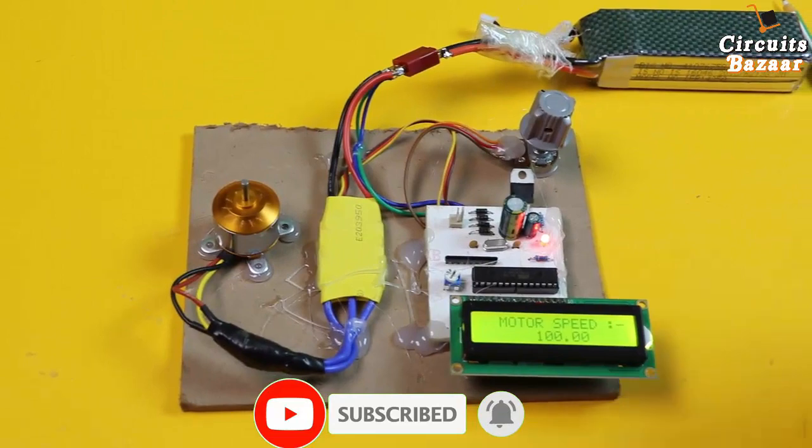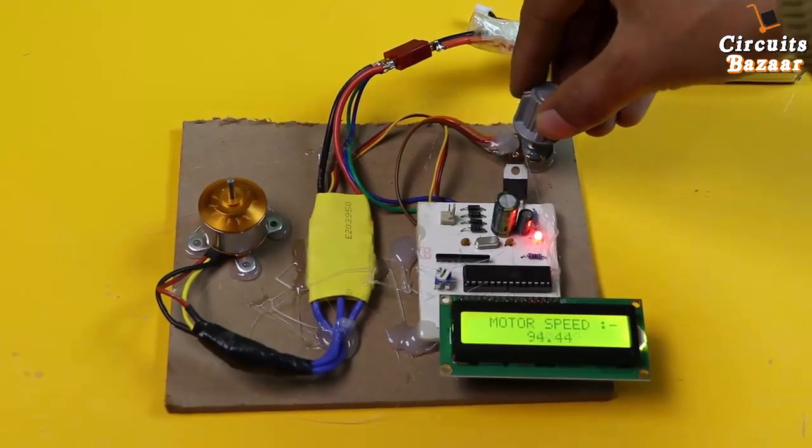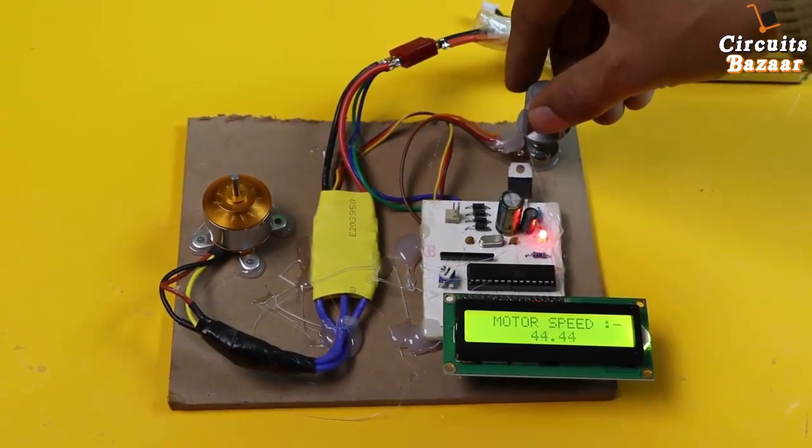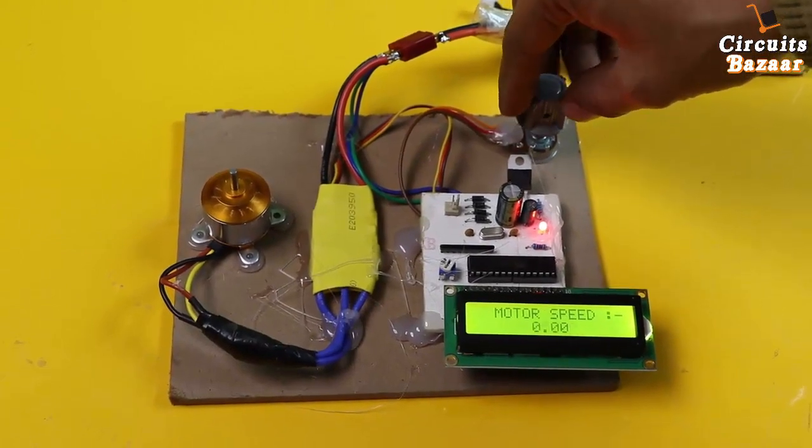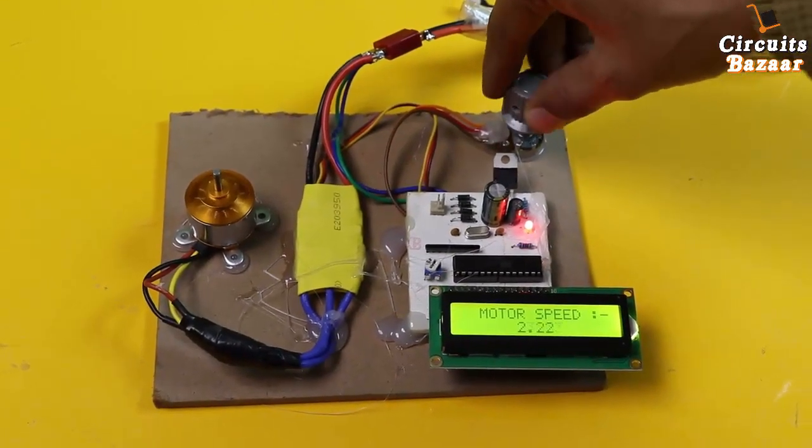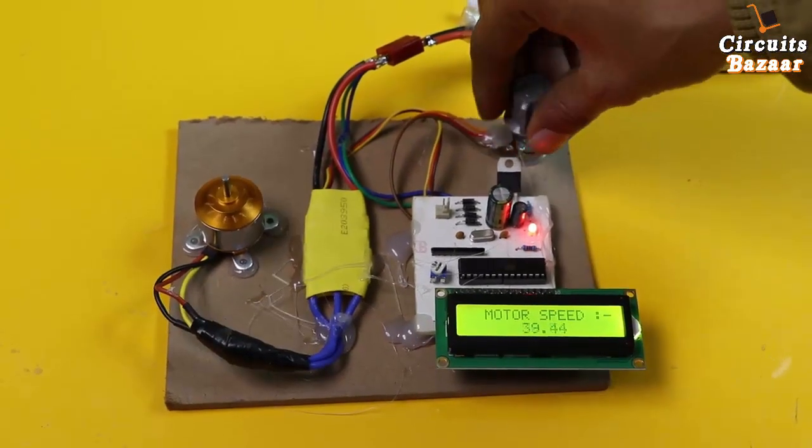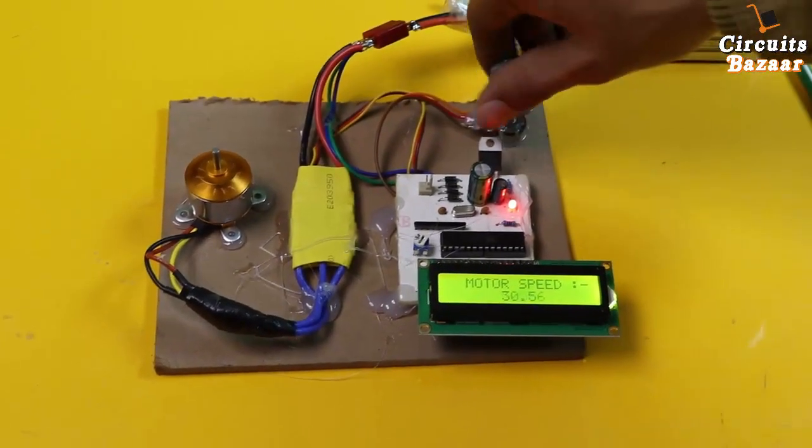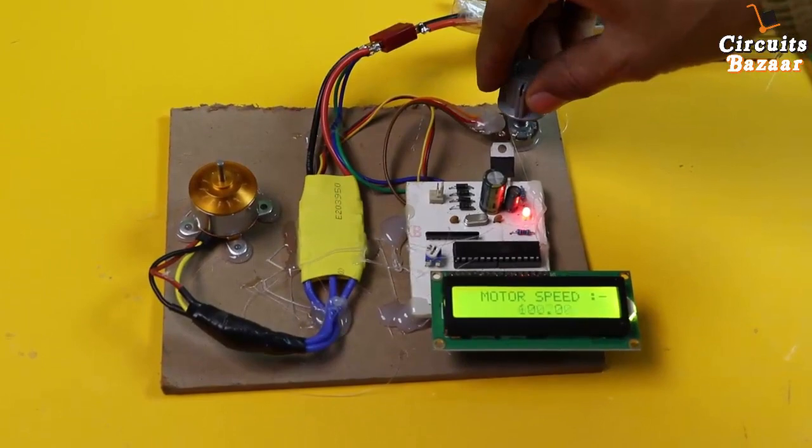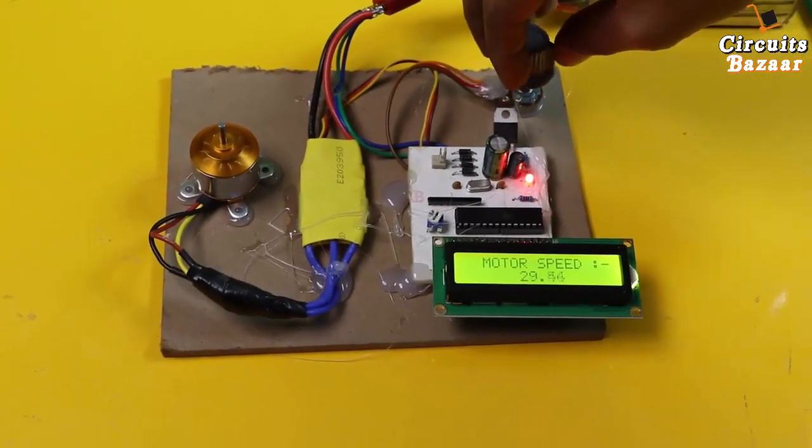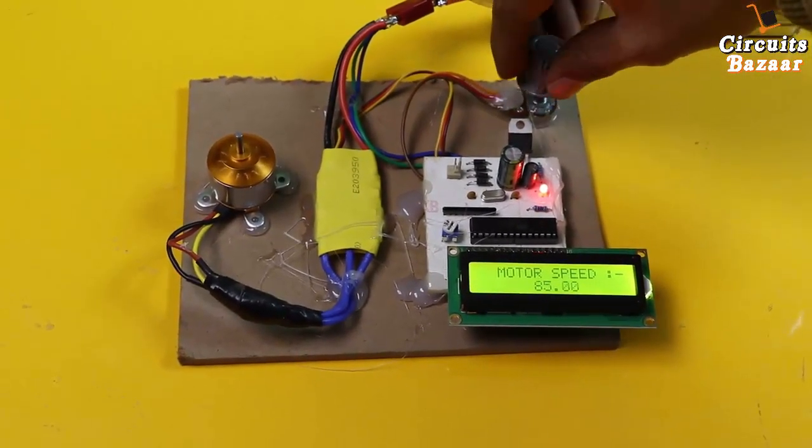Right now the motor is running at full speed. You can decrease or increase speed using this throttle. You can see the sound of the motor is also changing - 70% speed. That's simple as that.